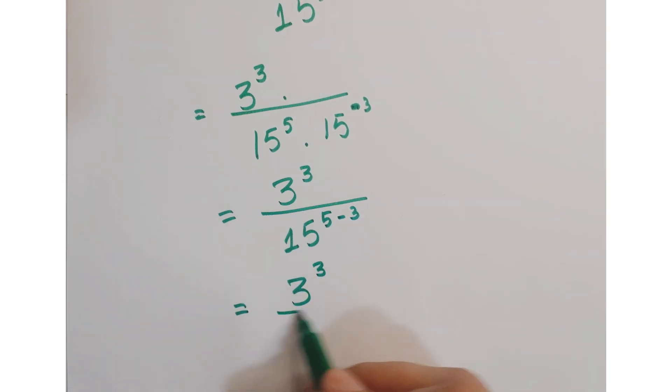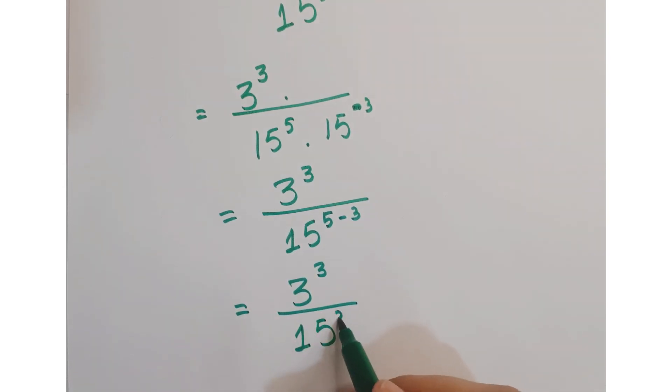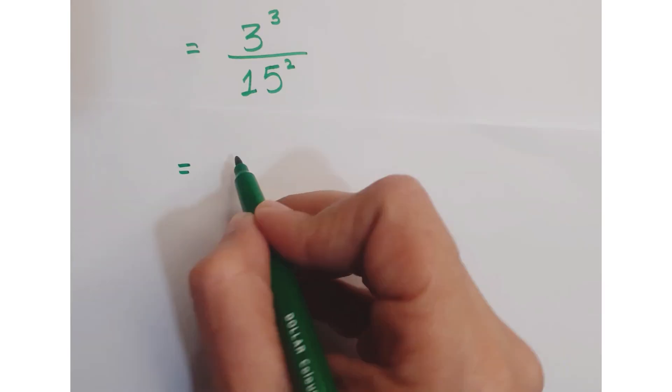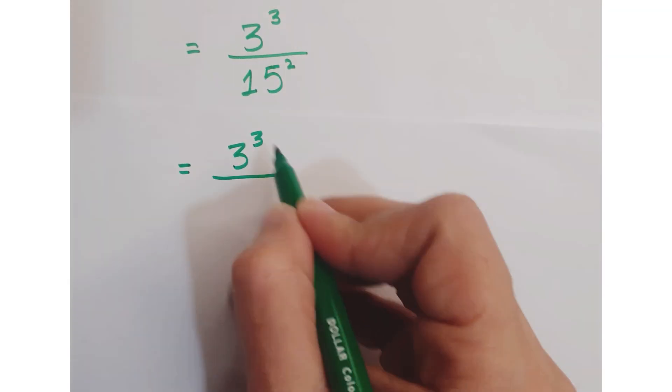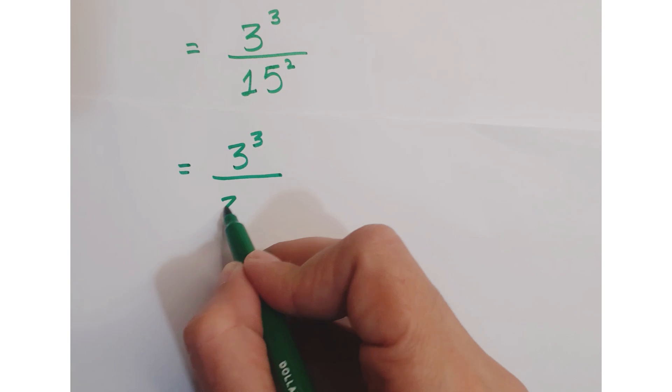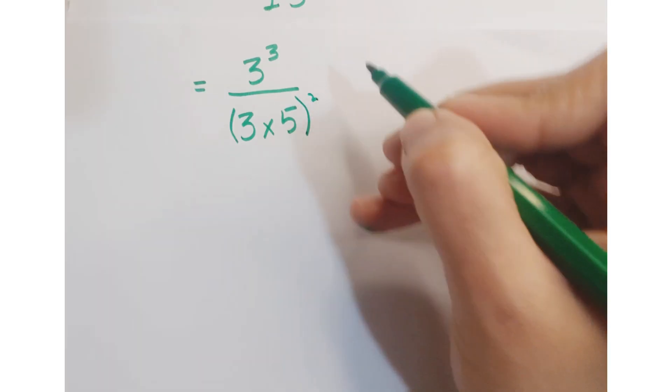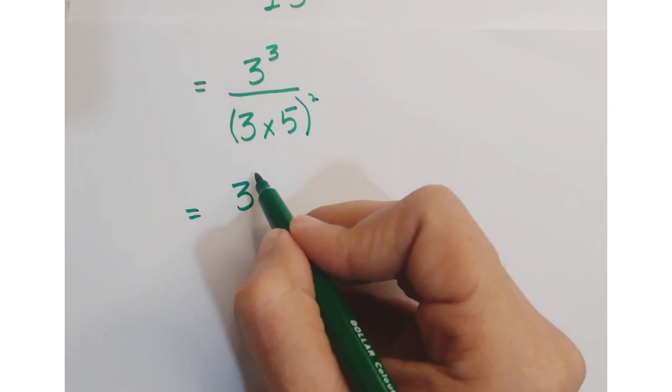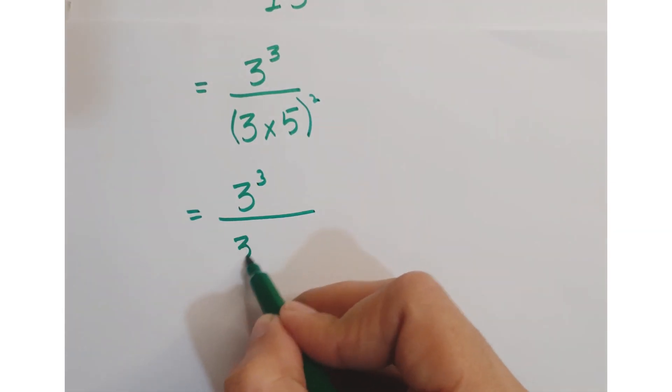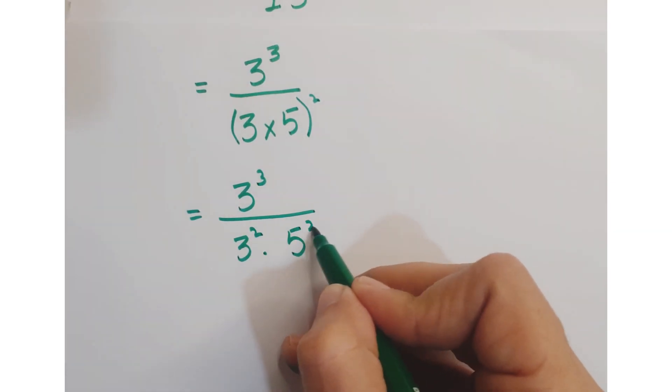Further, you can write it as 3 cube upon 15 square. Further, you can write it as 3 cube upon, just split this 15 into 3 into 5 whole square, or you can write it as 3 cube upon 3 square into 5 square.